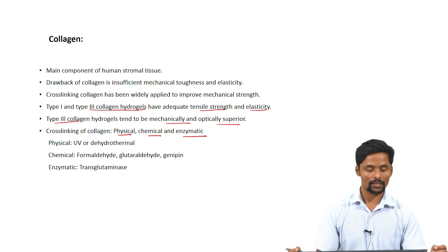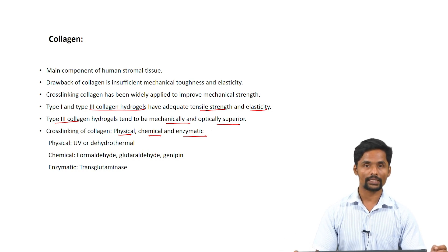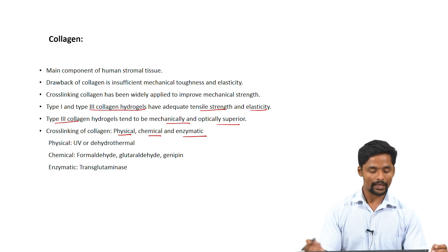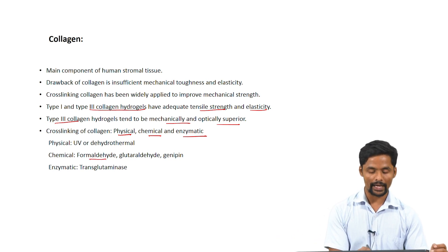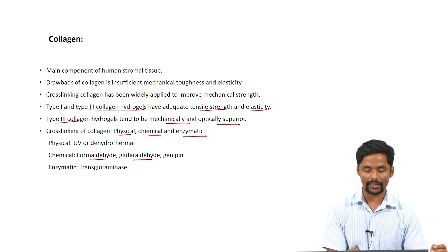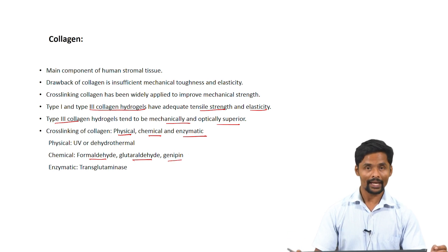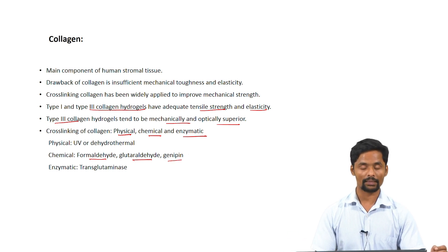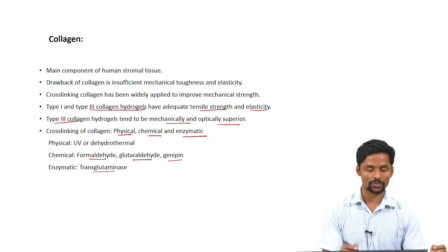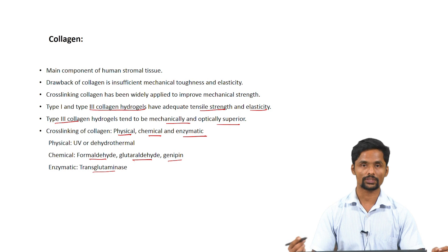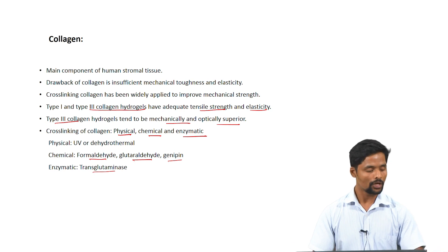Under the physical method, UV light and the dehydrothermal method are used. Under the chemical method, formaldehyde, glutaraldehyde, and genipin are used to cross-link collagen. Under the enzymatic method, transglutaminase is used to cross-link collagen, thereby overcoming the drawbacks associated with collagen.